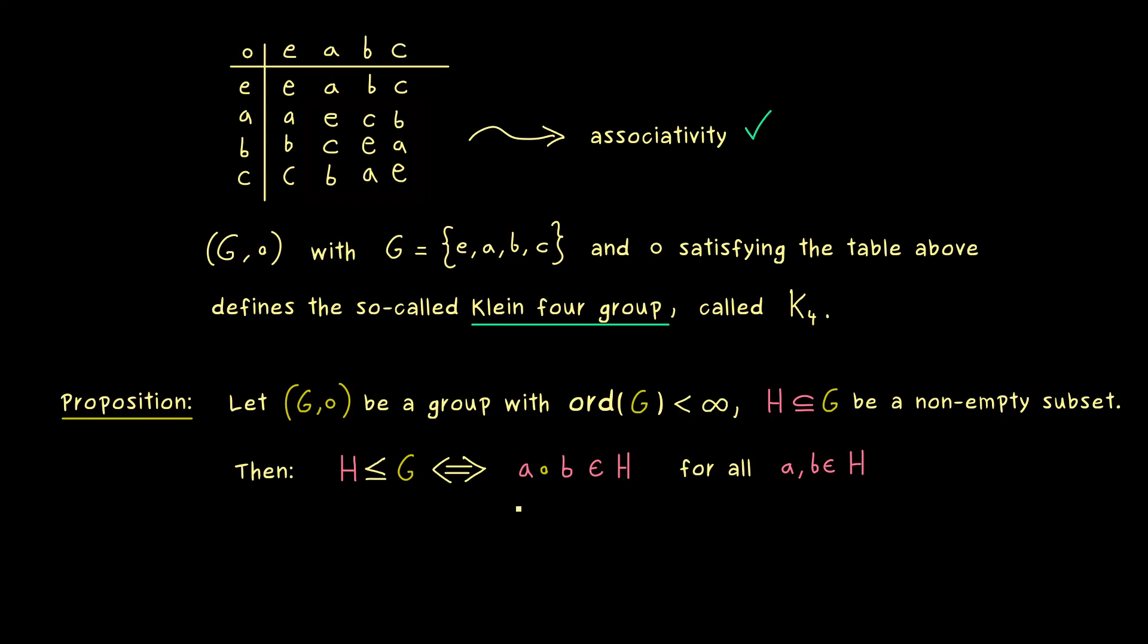This makes everything much simpler, because it means you only have to check that the binary operation is well-defined on H. Then you already know that H is actually a subgroup of G.